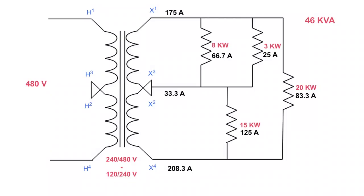Now some of you might be thinking: with transformers, power in equals power out, so why can't we just add up all our powers — which is 46 KVA in this case — and say the minimum KVA is 46 KVA? Well, if we take that 46 KVA, we have to split it equally across each winding, giving us 23 KVA on each winding. Let's determine what current those windings would be rated for: 23,000 divided by 120 gives me 192 amps on each side.